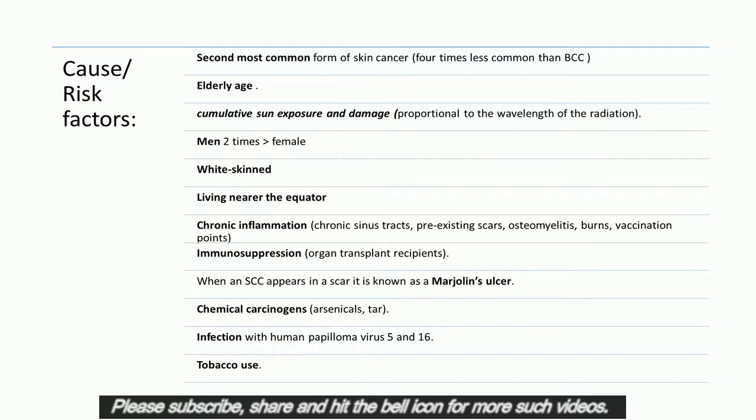When an SCC appears in a scar it is known as a Marjolin's ulcer. SCC is also caused by chemical carcinogens, arsenicals, tar, and infection with Human Papillomavirus types 5 and 16. There is also evidence that current and previous tobacco use doubles the relative risk of SCC.